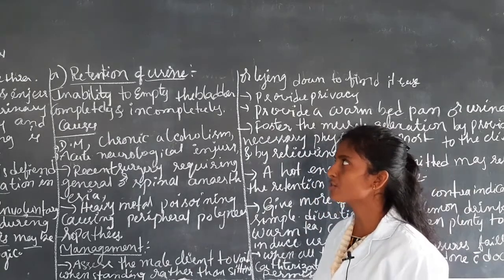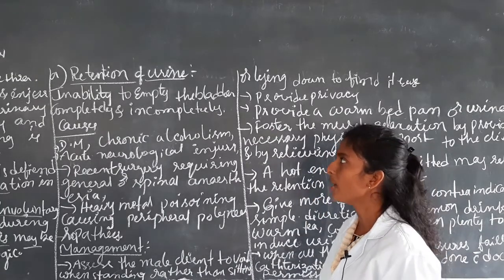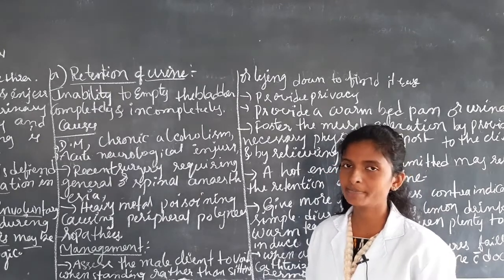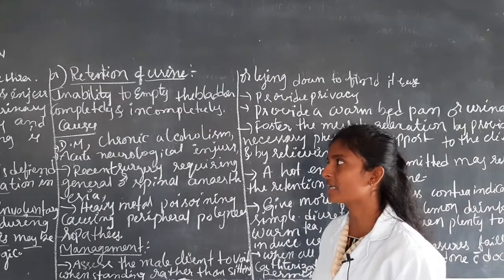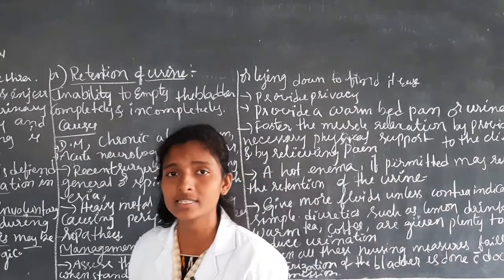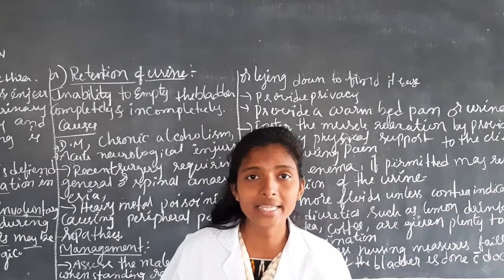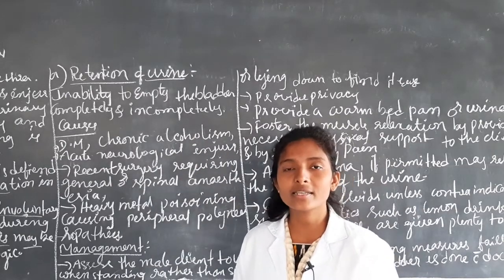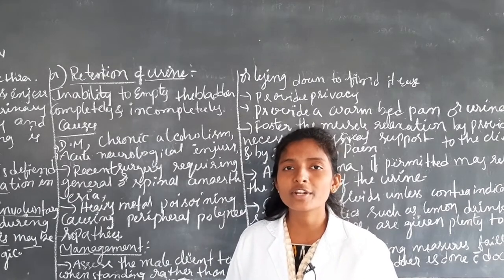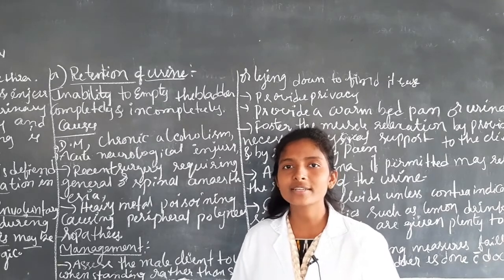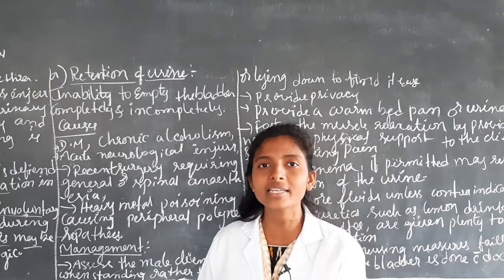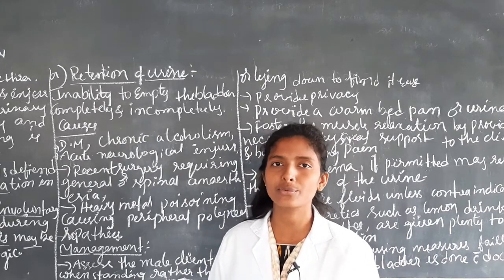The first thing is retention of urine — it is nothing but the inability to empty the bladder completely or incompletely. If the person is unable to empty his bladder completely or incompletely, there is a presence of retention of urine. That is known as retention of urine.